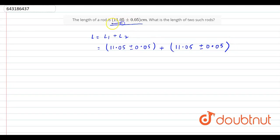This is the measured value, and this is the error associated with it. 11.05 is the measured value, and 0.05 is the error associated with it.